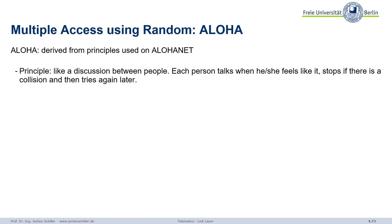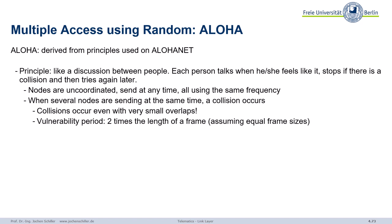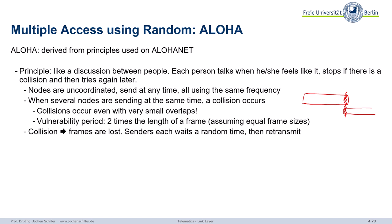We can fine-tune this. If we notice there's a collision, we stop and try again later. We do not coordinate the nodes; we can send any time on the same frequency. A collision occurs when we send at the same time. The problem is that a collision occurs already with a small overlap — even one flipped bit destroys a packet. So the vulnerability period, assuming equal frame size, is two times the length of a frame.